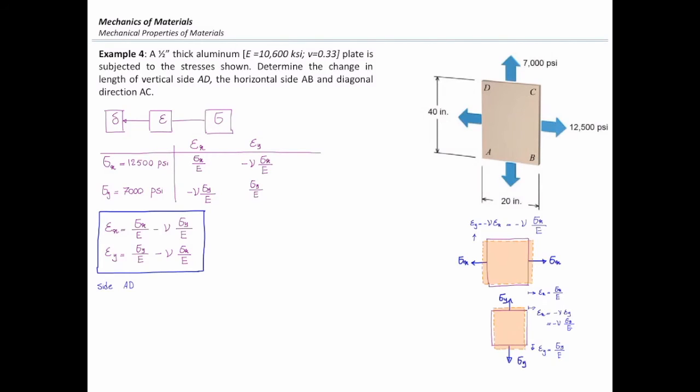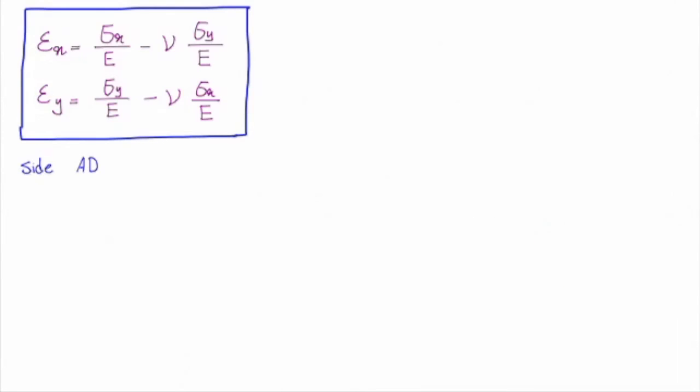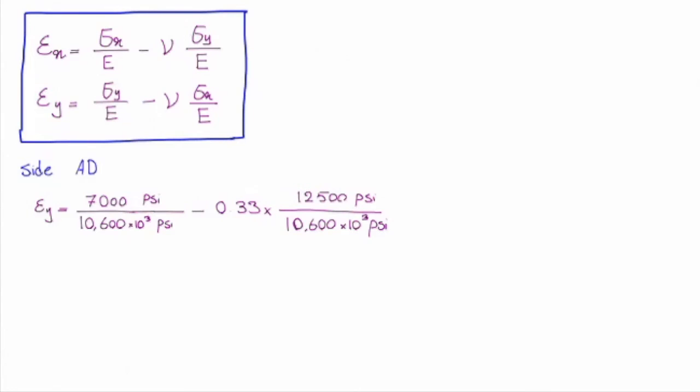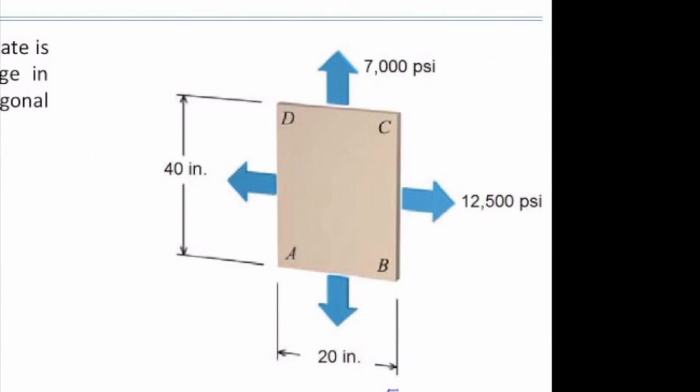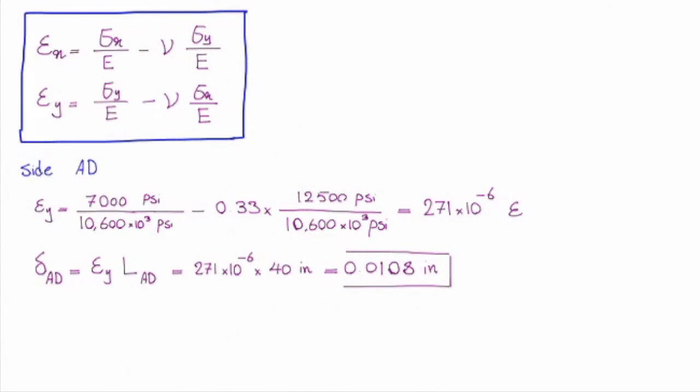The vertical deformation in the AD direction. I need to determine how much is Epsilon Y, then multiply that by the length, which is 40 inches. So Epsilon Y, I just plug the values into that equation, is Sigma Y over E, 7000 PSI over E, minus ν times Sigma X over E. And that gives me total strain in the Y direction. So that would be 271 times 10 to the minus 6 strain. The total change in the vertical direction would be strain times length in the vertical direction. So the strain is 271 times 10 to the minus 6, and length is 40 inches in the Y direction. And that gives me 0.0108 inches.